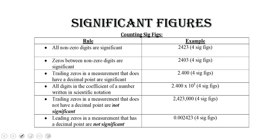This video is going to cover significant figures. What are significant figures anyway? When you measure matter, you use things like a thermometer to measure temperature, a ruler to measure length, a balance to measure mass, and each one of these instruments has a set precision. You can read these measurements up to a certain decimal place. Significant figures takes into account all of the digits in a measurement that can be read from your instrument, plus one extra digit of uncertainty.